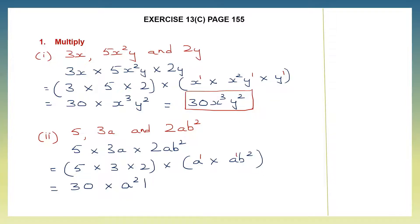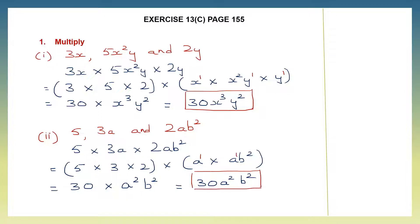Now b squared — I'll write b squared. 30 into a squared b squared is 30a squared b squared. So this is my final answer: 30a squared b squared.